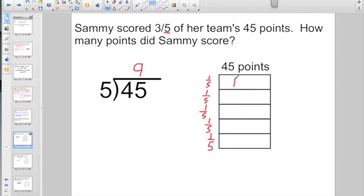The whole group was 45 points. And we divided by the denominator and ended up with a quotient of 9. So I have 9 for that fifth, and I have another 9 here for this fifth. This third-fifth here, that's another 9 points. And this fourth-fifth is going to give me 9 points. And this fifth-fifth is also going to give me 9 points.